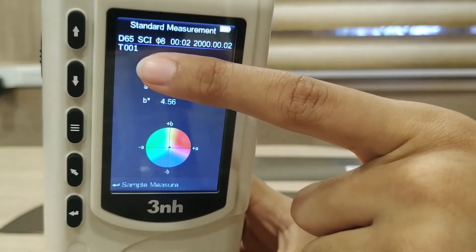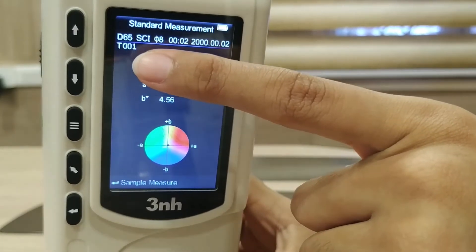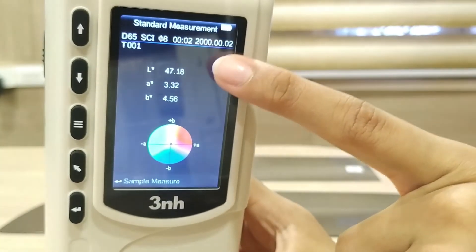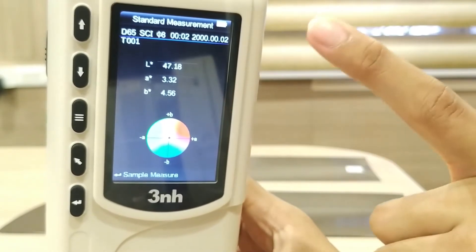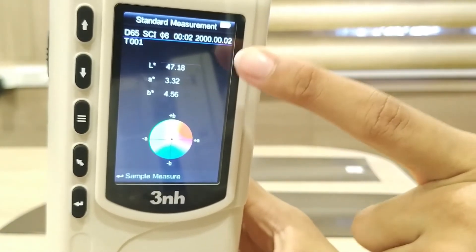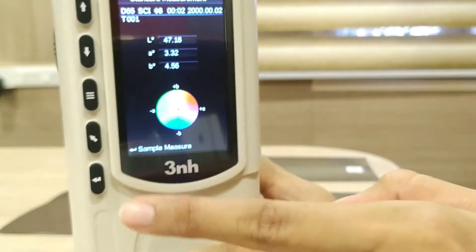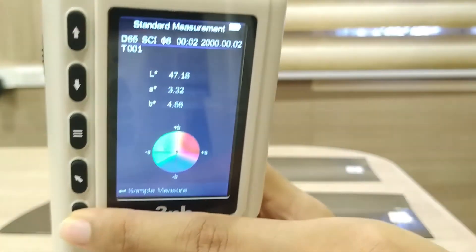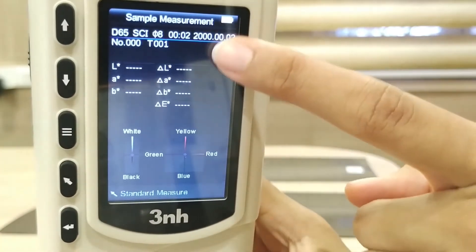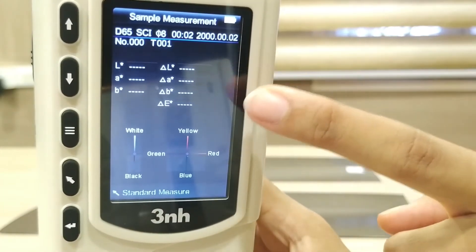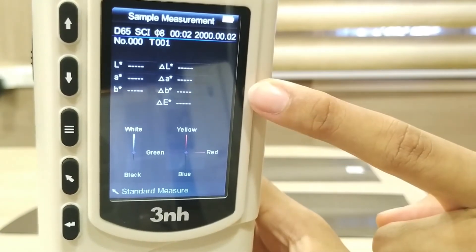Here T001 indicates that this is the first standard. These are the LAB values for our standard. Now to measure the sample based on this standard, you're going to click on this button. As you can see the values are all empty. Here you measure the sample value.